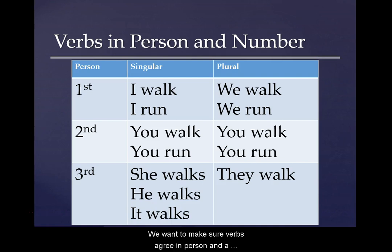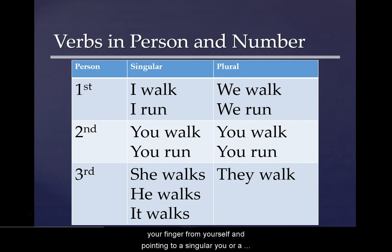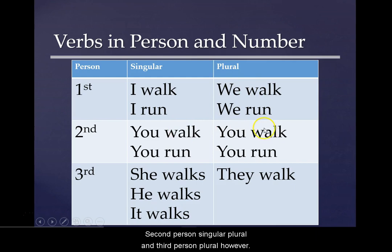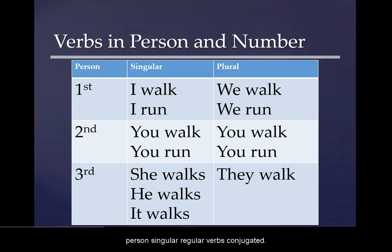We want to make sure verbs agree in person and in number. There's first person, second person, and third person, and they're singular and plural. First person refers to I, me, my. Second person is you — pointing to a singular you or a collective you. Third person is he, she, or it in singular, or they in plural. You'll notice that when conjugating the verb 'to walk,' the verb walk stays the same in first person singular and plural, second person singular and plural, and third person plural. However, third person singular — the verb adds an S.